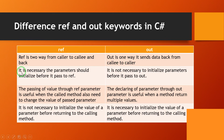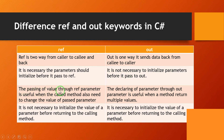The second difference: it is necessary to initialize the parameter before passing it with ref, but it is not necessary to initialize the parameter before passing it with out. Passing a value through a ref parameter is useful when the called method also needs to change the passed parameter's value.